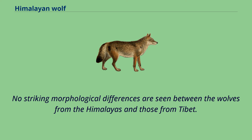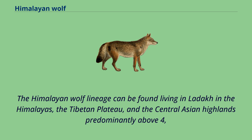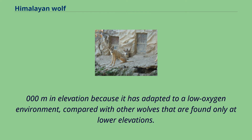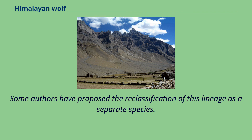The Himalayan wolf lineage can be found living in Ladakh in the Himalayas, the Tibetan Plateau, and the Central Asian Highlands, predominantly above 4,000 meters in elevation, because it has adapted to a low-oxygen environment, compared with other wolves that are found only at lower elevations. Some authors have proposed the reclassification of this lineage as a separate species.